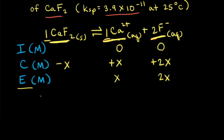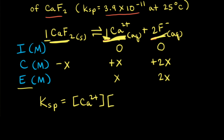The next step is to write the Ksp expression from the balanced equation. Ksp is equal to the concentration of calcium 2+ ions raised to the first power — since there's a coefficient of 1 in the balanced equation — times the concentration of fluoride anions raised to the second power, since there's a coefficient of 2 in the balanced equation.